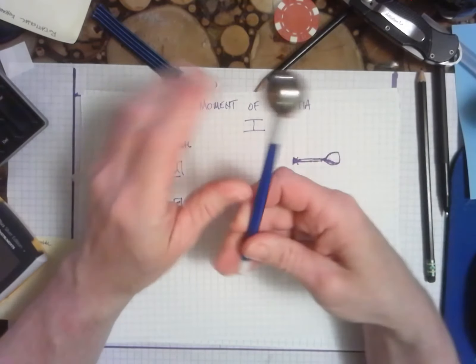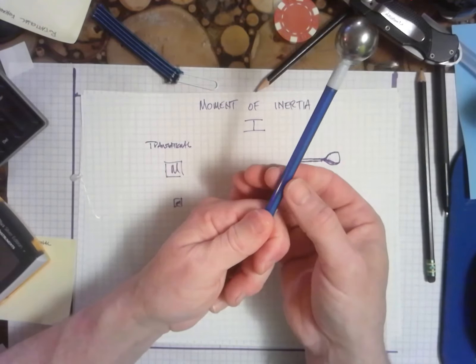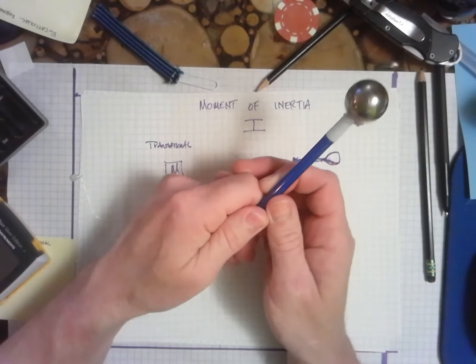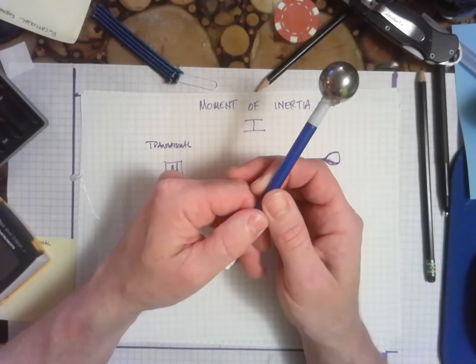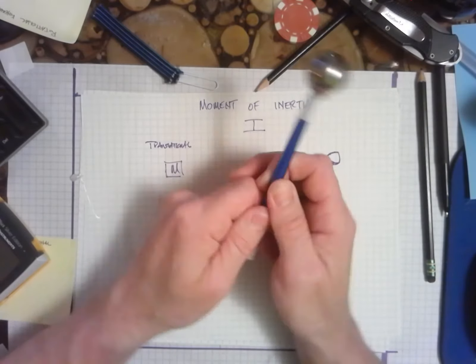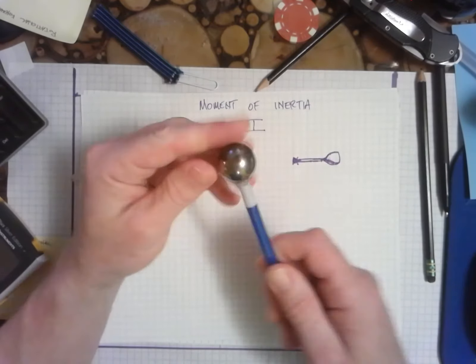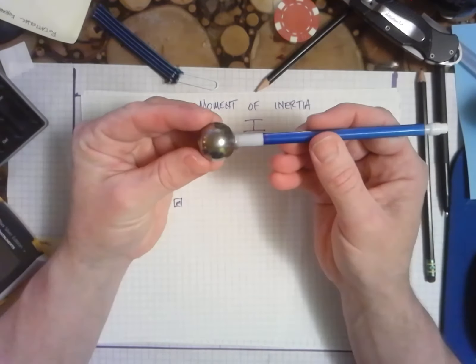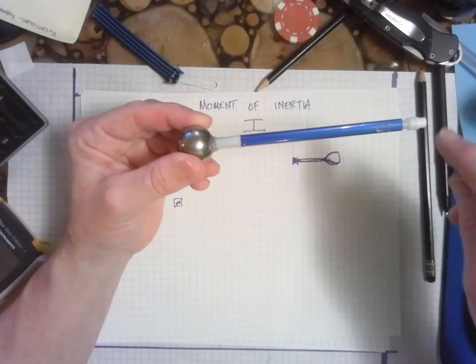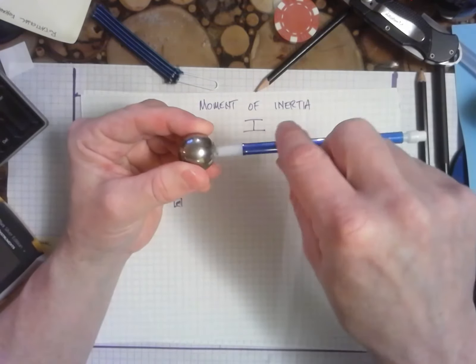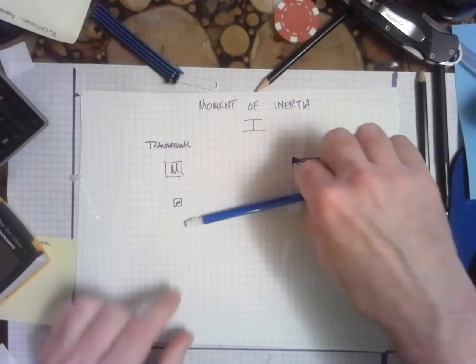When baseball players want to make sure they make contact, they choke up, so they bring their axis in even closer. That way their rotational inertia for their bat becomes less, and then they can make adjustments as the ball is coming to make sure that they make contact. So the idea here is this object has really an infinite number of rotational inertias. We could spin it at one of the ends, we could spin it here, we could spin it kind of close to this end.